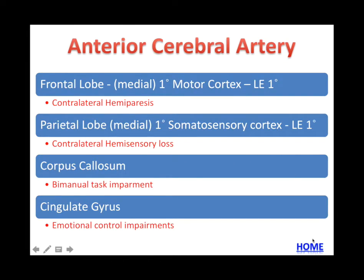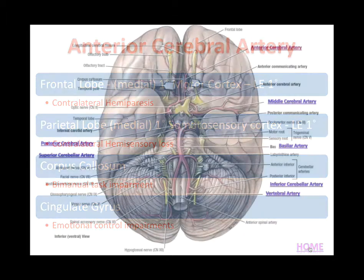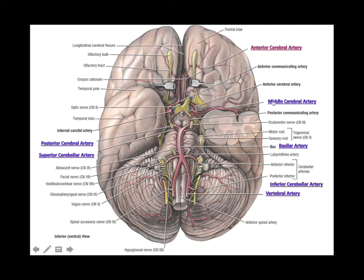When using this for study purposes, look at the bottom right of each slide where you'll see a home button — hit home and it takes you back to the main screen of the brain with the Circle of Willis embedded. The second artery to discuss is actually the most common artery impaired in an ischemic stroke: the middle cerebral artery.